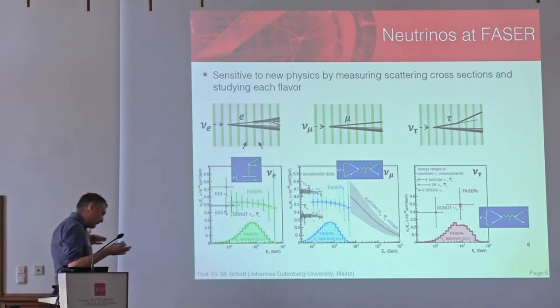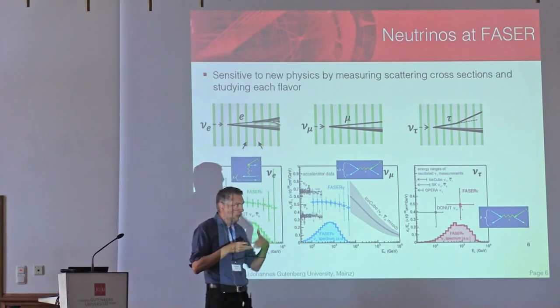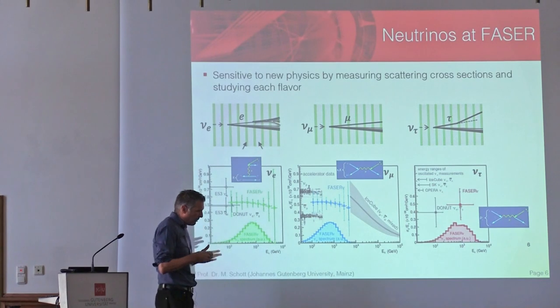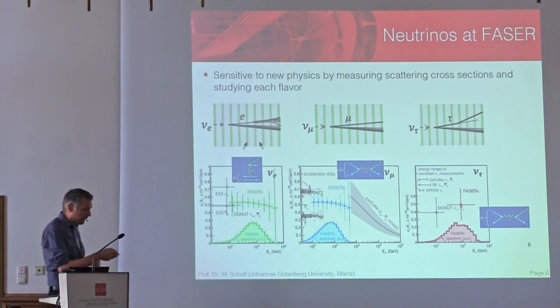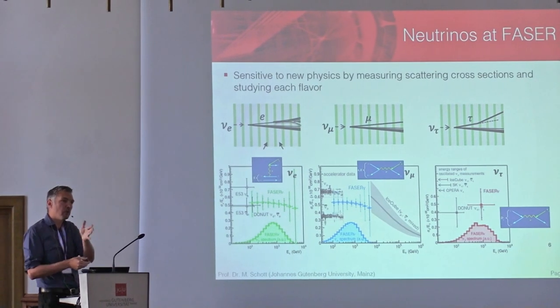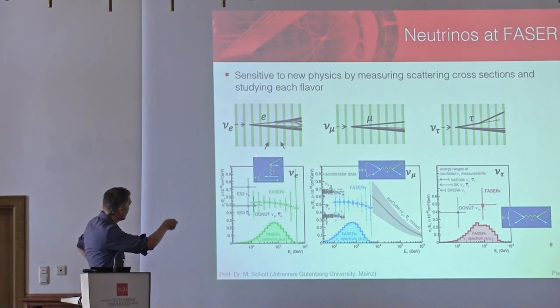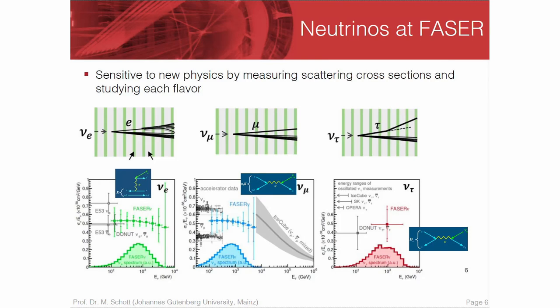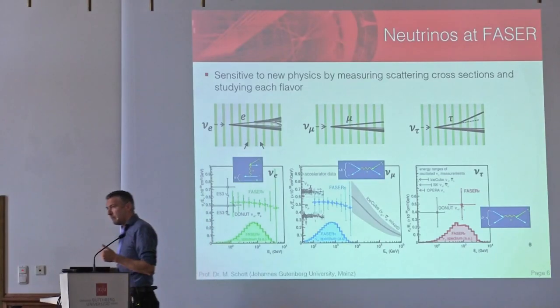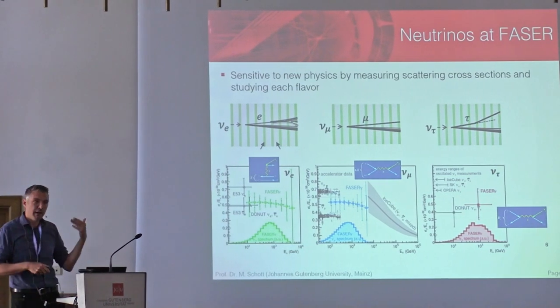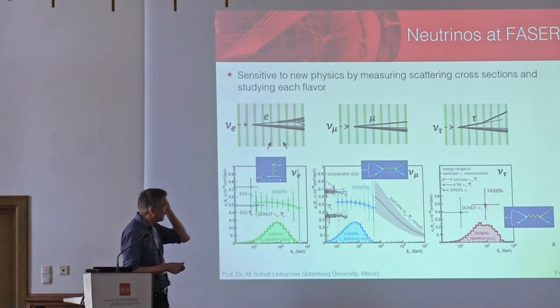Last but not least, the neutrinos. Obviously lots of neutrinos will also be produced in the proton-proton collisions and will directly fly to our FASER-ν detector. The FASER-ν detector is essentially just a block of tungsten interleaved with emulsion films. The basic signatures are electron neutrinos, muon neutrinos, and tau neutrinos. Electron neutrinos produce an electron plus bremsstrahlung and recoil of the nucleus; muons give a straight line plus recoil; and tau gives a straight line, tau decay, and nucleus recoil. What we can measure there are essentially production cross-sections in an energy range which has never been measured before.